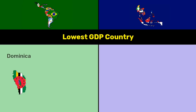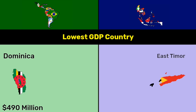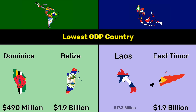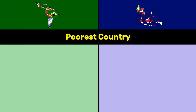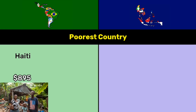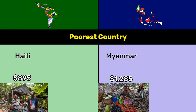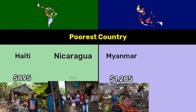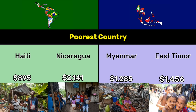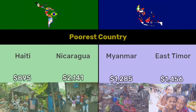Lowest GDP country: Dominica 490 million dollars versus East Timor 1.9 billion dollars; Belize 1.9 billion dollars versus Laos 17.3 billion dollars. Poorest country by GDP per capita: Haiti 895 dollars and Myanmar 1,285 dollars; Nicaragua 2,141 dollars and East Timor 1,456 dollars.